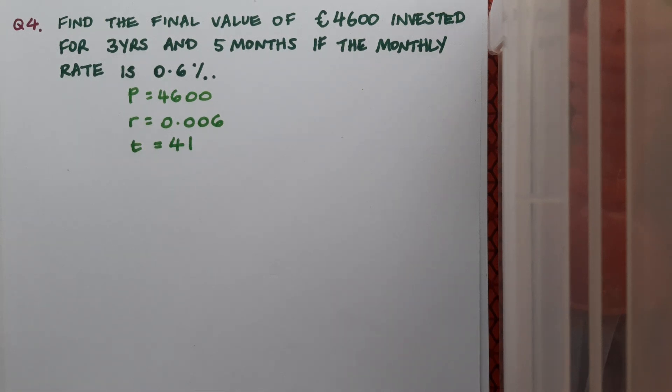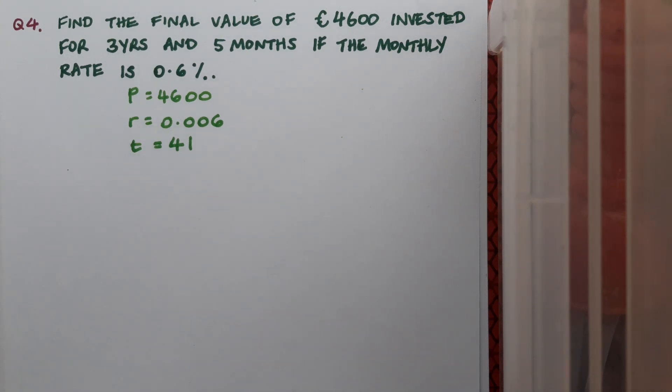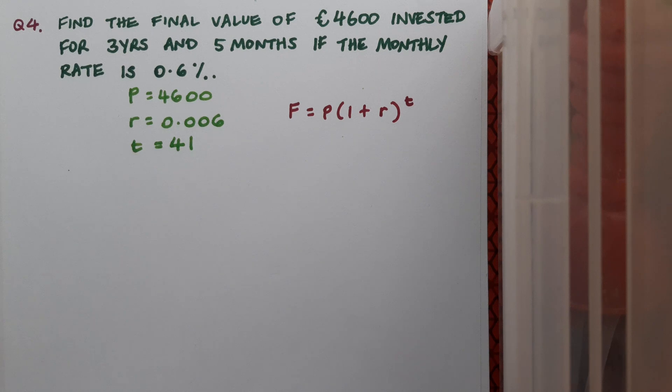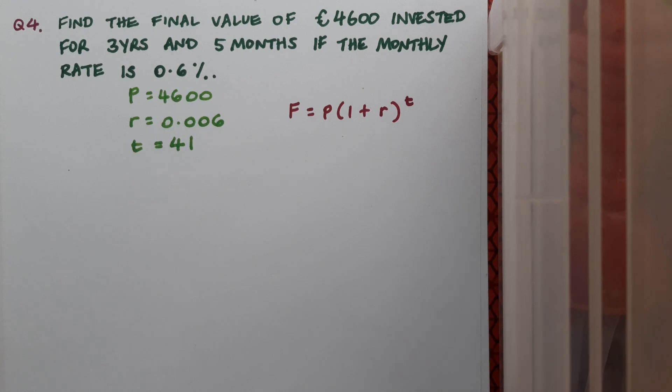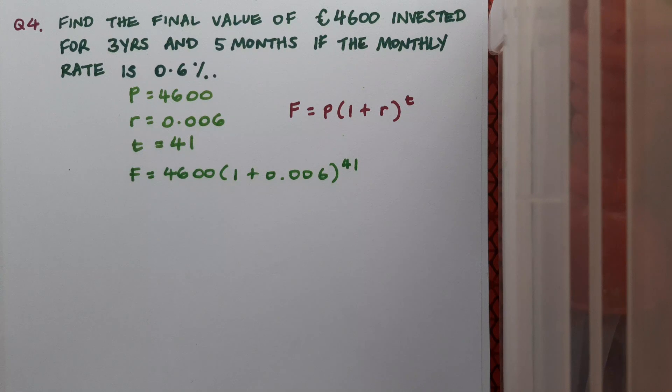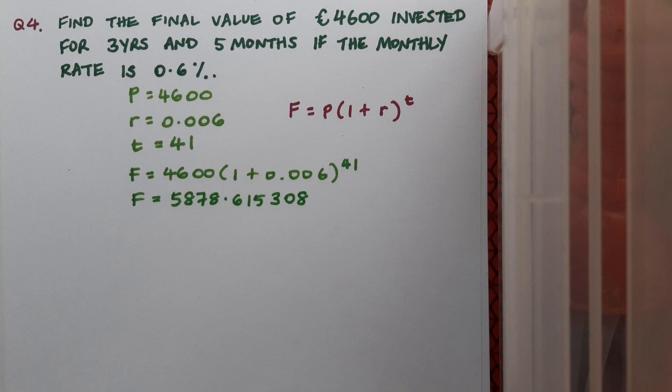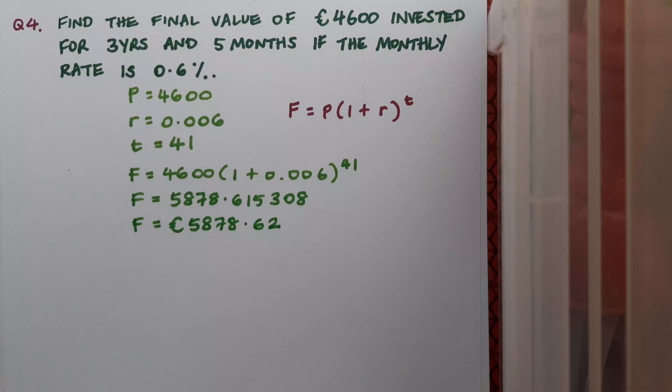I'm starting by noting my values for P, r, and t, and note that I've changed my time from three years and five months into 41 months. Again I must make sure that the units for my rate which is a monthly rate and my time which is now in months match before I begin with the formula. I'm making a note of the formula I'm going to use which is my final value formula from page 30 in the log tables and now I'll fill in. At this stage I'll go to my calculator and type it in exactly as I see it and I'll get an F value of 5878.615308 at which stage I'll then round off even though the question didn't specifically state it because I'm dealing with money and at the end of the question I'm going to round to two decimal places. So my final value here is €5878.62.